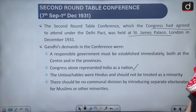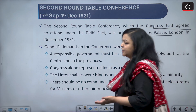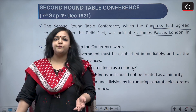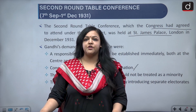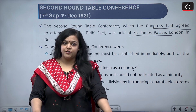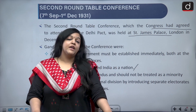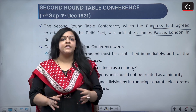Another very important demand from Gandhiji was that there should be no communal division by introducing separate electorates for Muslims or any other minority. Gandhi understood what the British were trying to do — they were trying to create a communal divide by extending separate electorates — and this is what Gandhi did not want to happen.